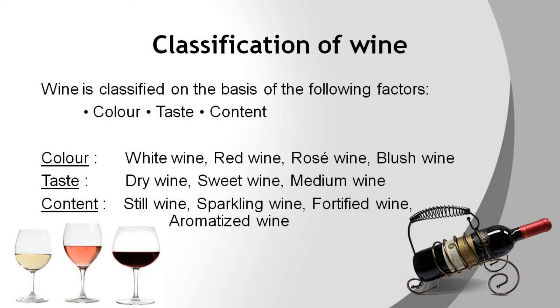Blush wines are a new style of rosé wines developed in California. The skins of black grapes are allowed to macerate with the must for a very short period, which produces a very light pink coloured wine.